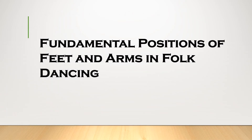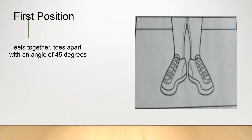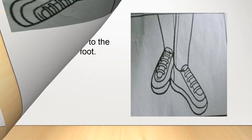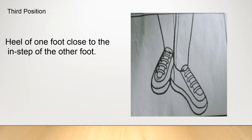Fundamental positions of feet and arms in folk dancing. First position: heels together, toes apart with an angle of 45 degrees. Second position: one leg on each side, or one foot distance. Third position: heel of one foot close to the instep of the other foot.